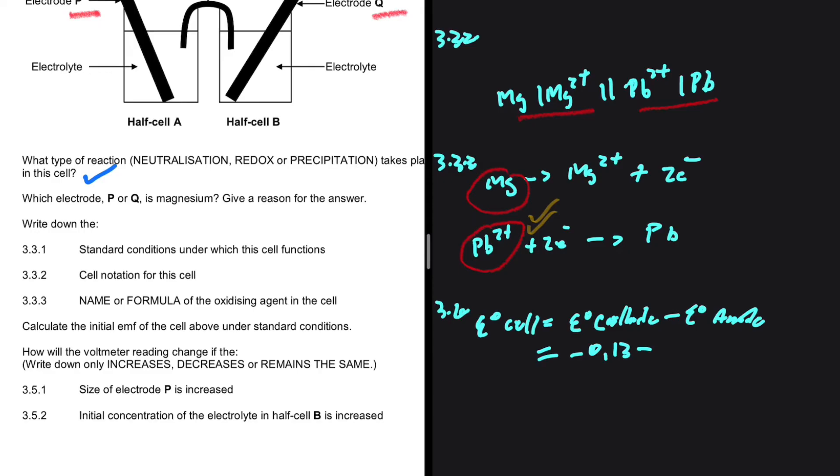At the anode, we have magnesium. That is minus 2.36. If you put that in your calculator, you should get 2.23 volts as the initial EMF of the above cell under standard conditions.